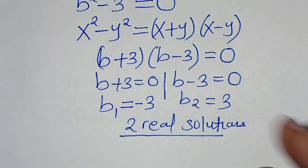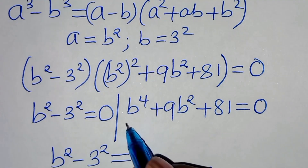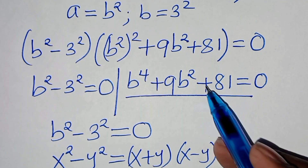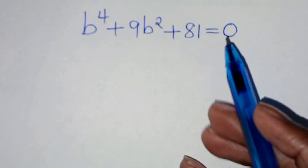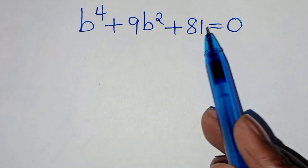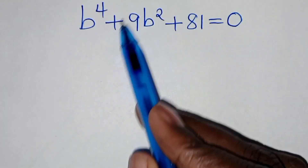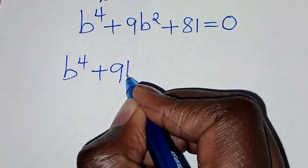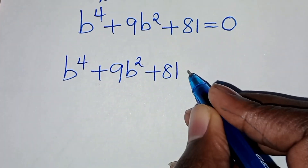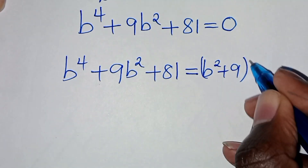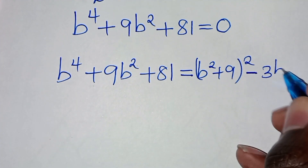Now, the first part is solved. Let's proceed to the second part, which is a polynomial of 4th degree — or rather what we call a quartic equation: b to power 4 plus 9b squared plus 81, equal to 0. To solve this, we apply the difference of two squares approach. We can express b to power 4 plus 9b to power 2 plus 81 as b to power 2 plus 9, raised to power 2, then subtract 3b squared.